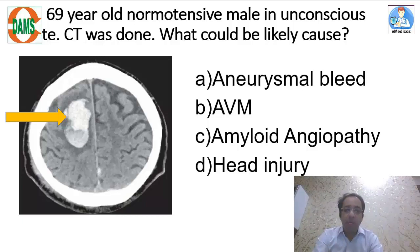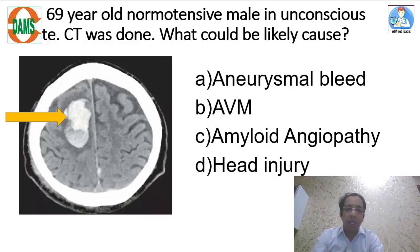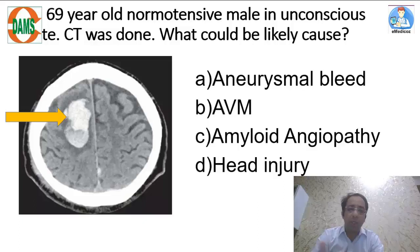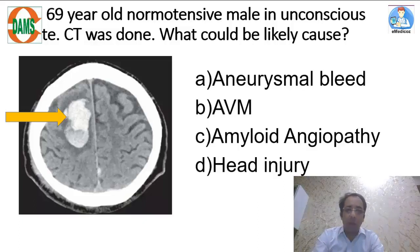You must have read about the Charcot arteries — the arteries of hypertensive bleed. Hypertensive hemorrhage is typically seen in the basal ganglia, thalamus, pons, or cerebellum. But this is a lobar hematoma, so we have to think of other causes of parenchymal bleeds.